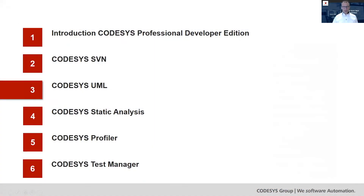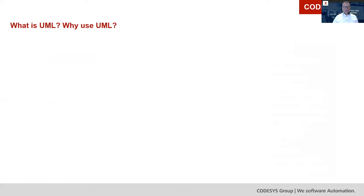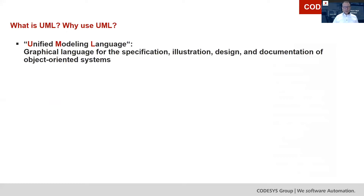Let's go to the next tool integrated in the Codesys Professional Developer Edition: Codesys UML. What is UML and why should you use it? UML is an abbreviation for Unified Modeling Language, which is a graphical language for the specification, illustration, design, and documentation of object-oriented systems.